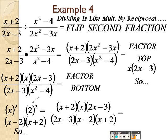So, the point is, now I can see a whole bunch of stuff that I need to cross out. This 2x minus 3 I can cross out. This x plus 2 I can cross out. And all I have left is that x on top and that x minus 2 on the bottom, which happens to be your final answer.